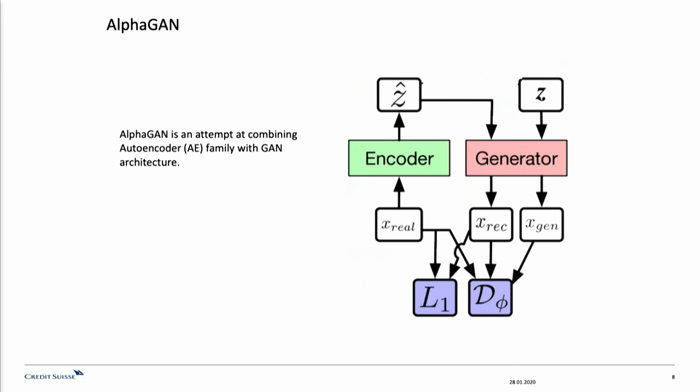To describe how it works: the encoder will take a sample of real data, extract some features, and those features will be passed on to the generator, which will try to reconstruct the initial data.